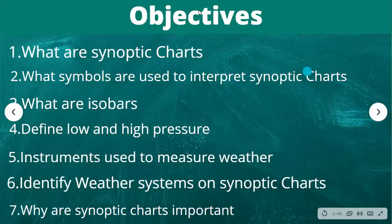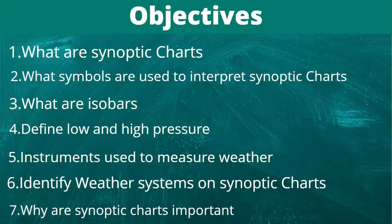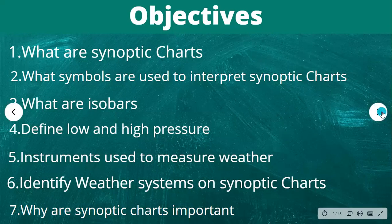The first thing we need to know is our objectives, and we have seven objectives. The first one is what are synoptic charts? The second one is what symbols are used to interpret synoptic charts? Third, what are isobars? Fourth, define low and high pressure. Fifth, instruments used to measure weather. Sixth, identify weather systems on synoptic charts. And last but certainly not least, why are synoptic charts important?